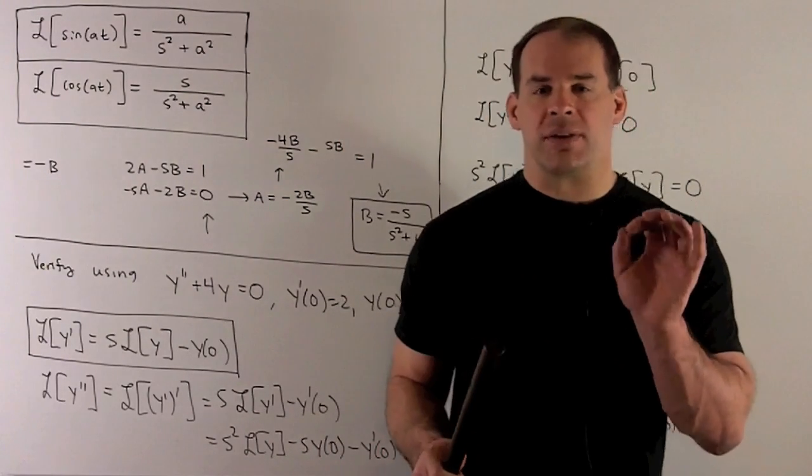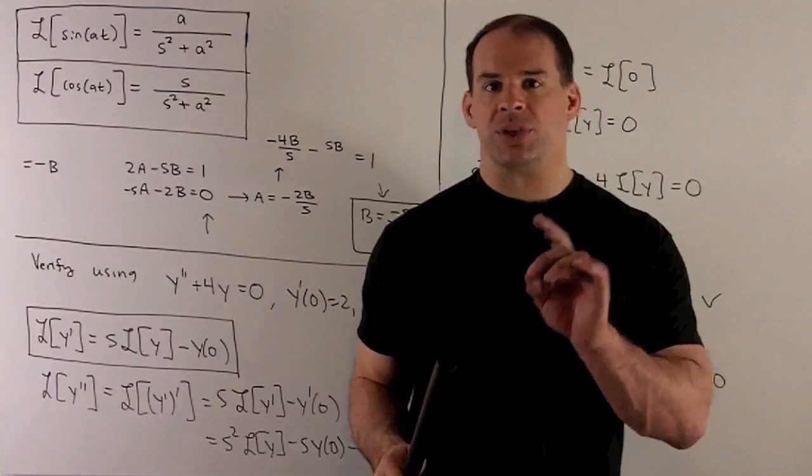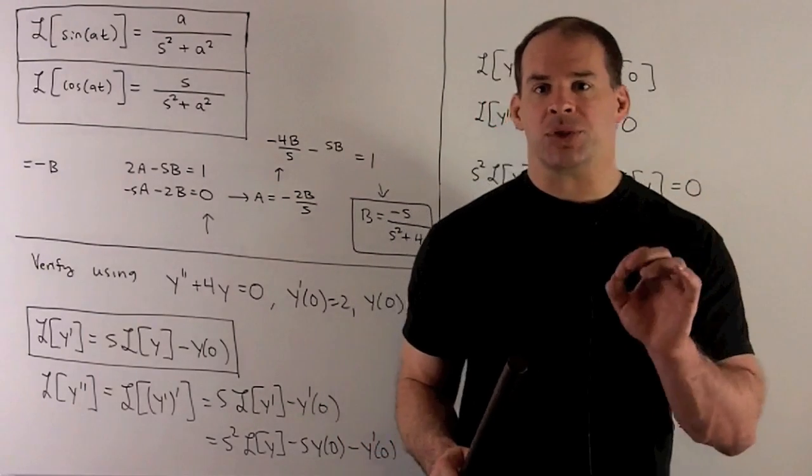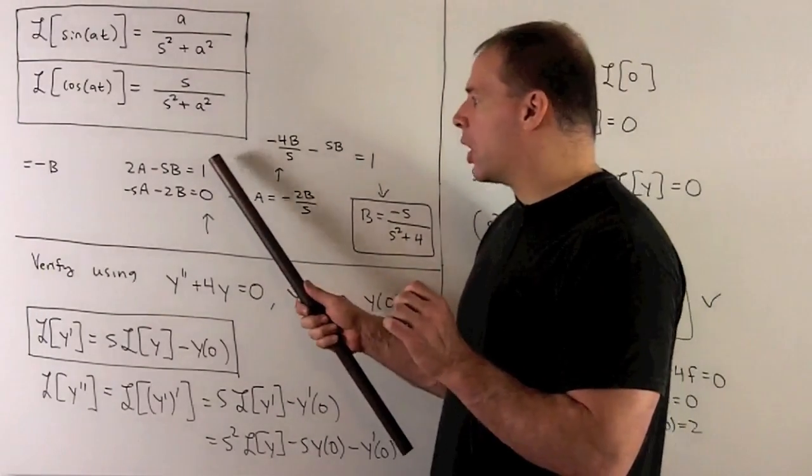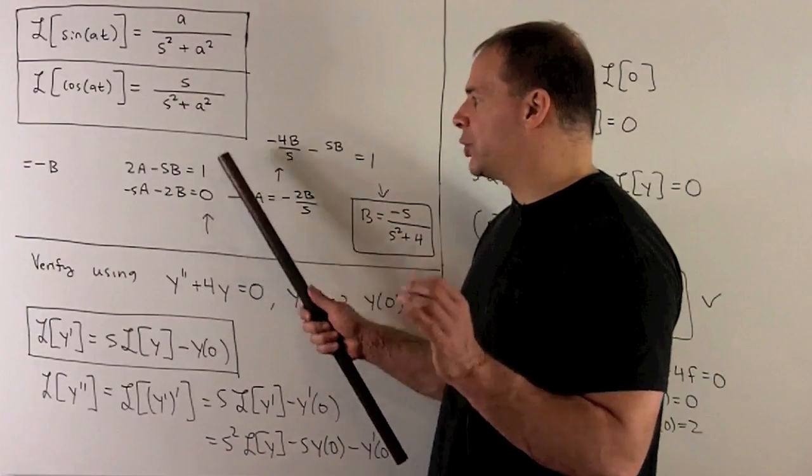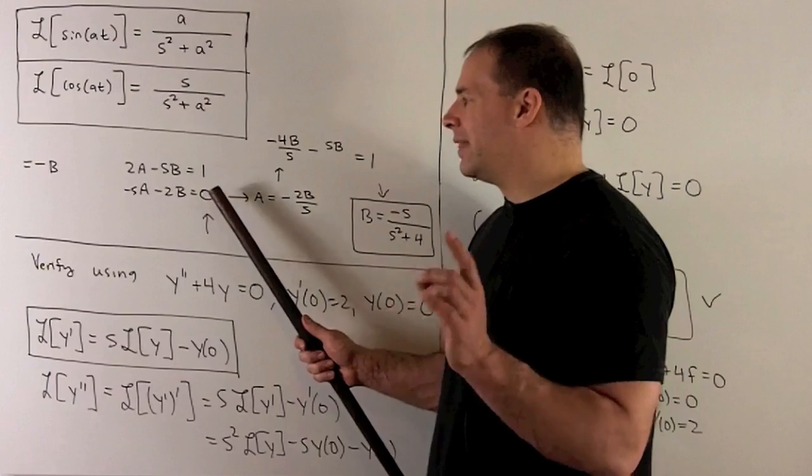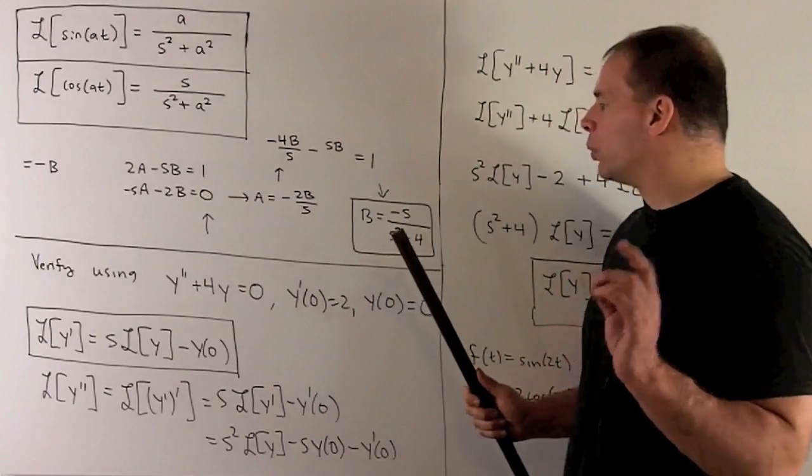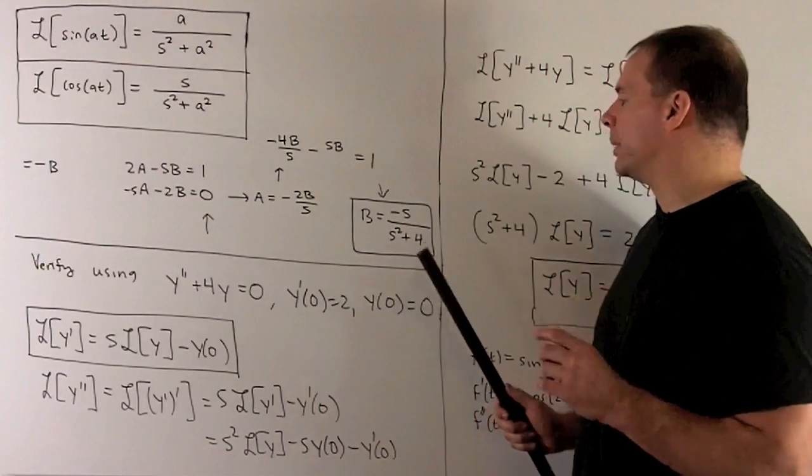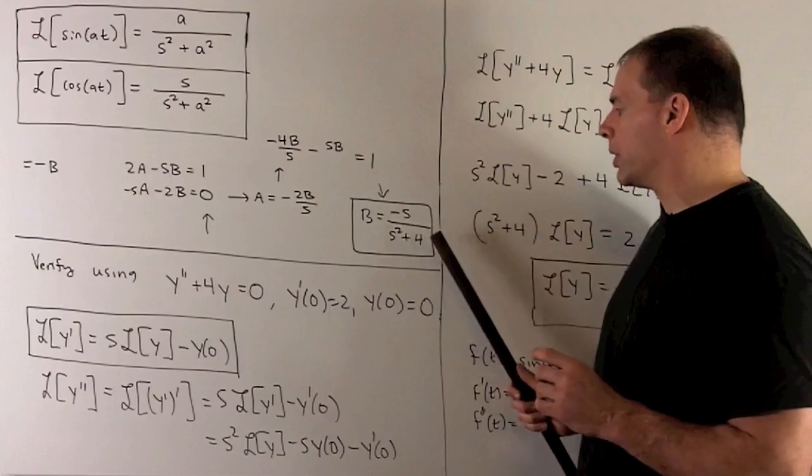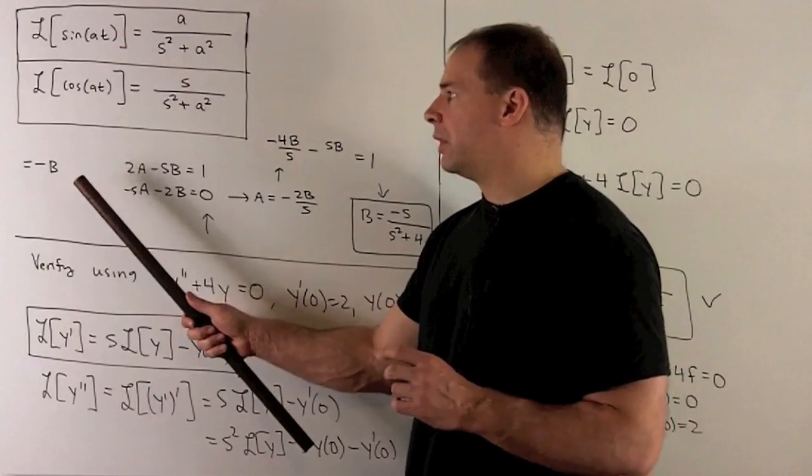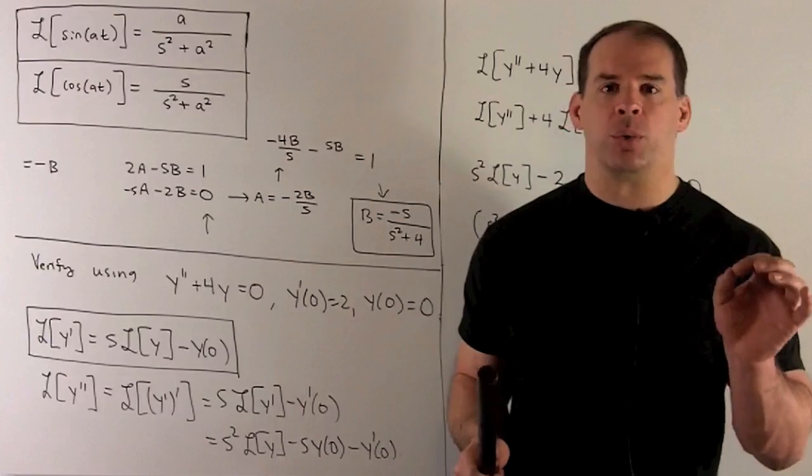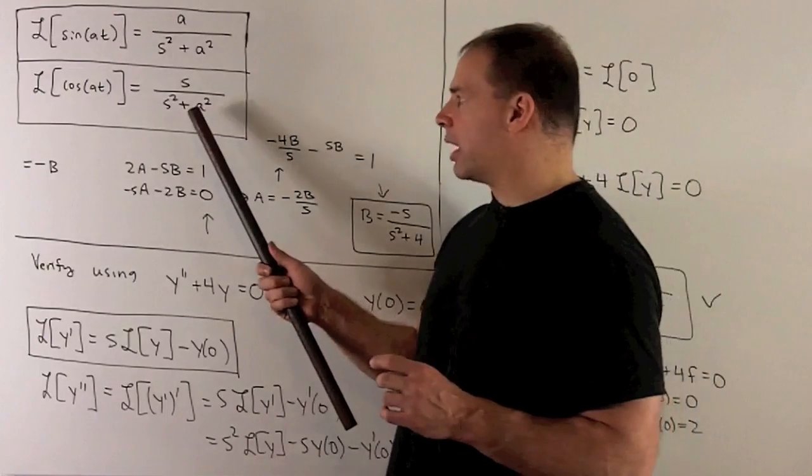The only change is going to be when you solve for your a and your b. There, instead of getting the derivative equal to sine of 2t, we want the derivative equal to cosine of 2t. The change we're going to have, where we had 0 and 1 before, we now change it to a 1 and a 0. Then, if you solve for your a and b, what's going to come out in that special case will be minus s over s squared plus 4. Then we take minus b, and if you replace your 2 with an a, the general formula comes out.